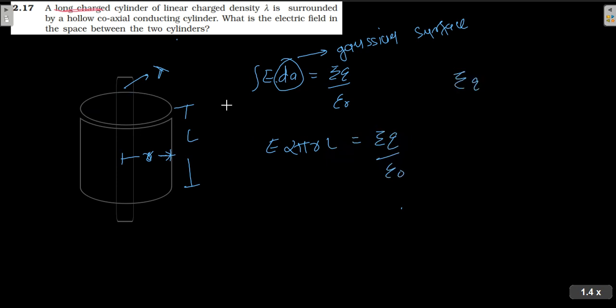So what is summation q? The linear charge cylinder is lambda, and how much is the length? L is taken. So how much is the charge here? Lambda into L. So E is equal to, this goes down here. Lambda into L divided by 2 pi r L epsilon naught. So L will cut from L. So what is the answer here? Lambda upon 2 pi epsilon naught into r.